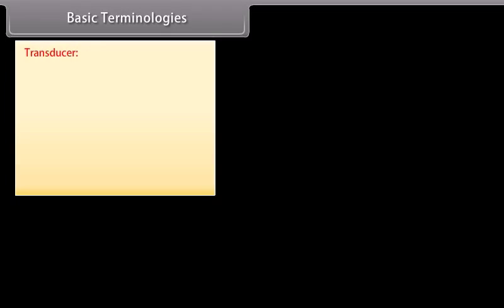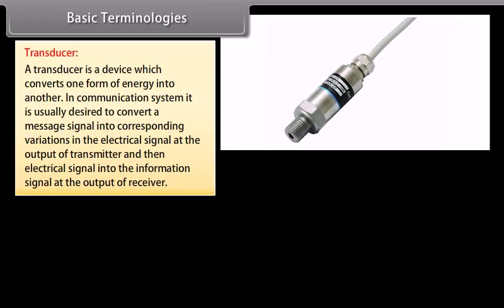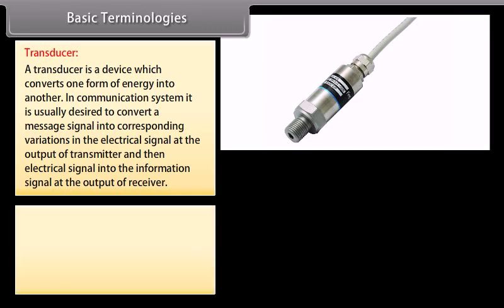A transducer is a device which converts one form of energy into another. In a communication system, it is usually desired to convert a message signal into corresponding variations in the electrical signal at the output of the transmitter, and then the electrical signal into the information signal at the output of the receiver.